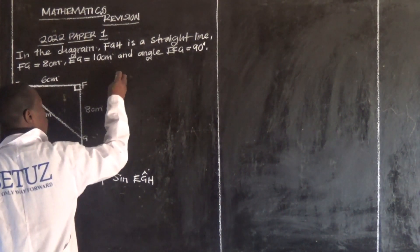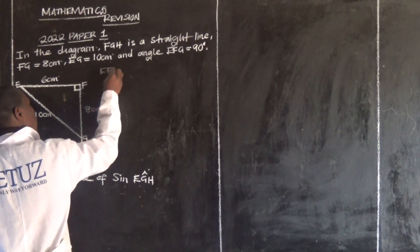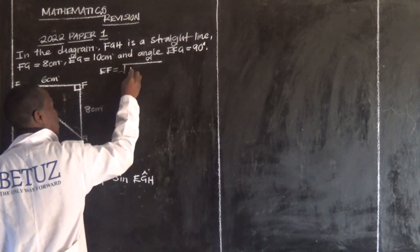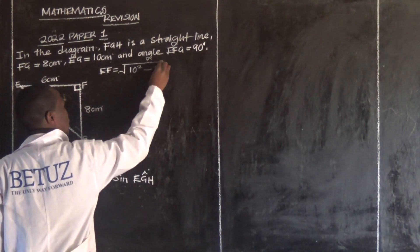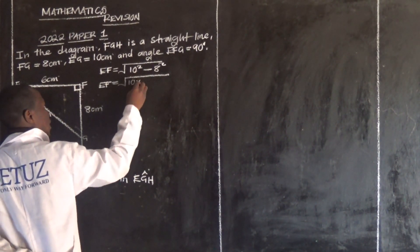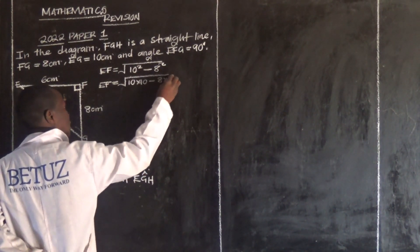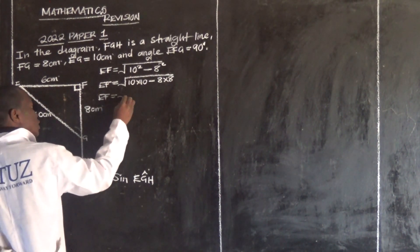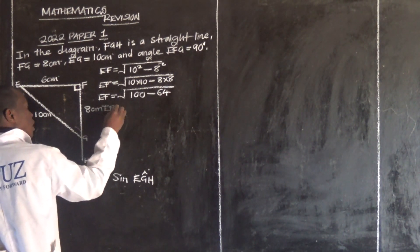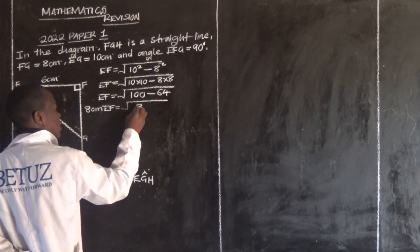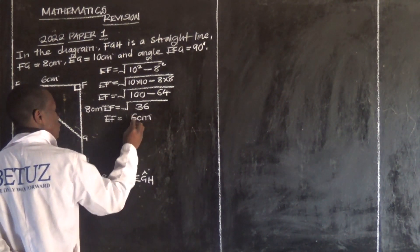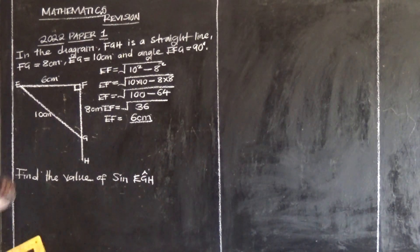So where did I get 6cm from? EF equals the square root of 10 squared minus 8 squared. That is the square root of 100 minus 64, which equals the square root of 36, giving us EF equals 6cm.